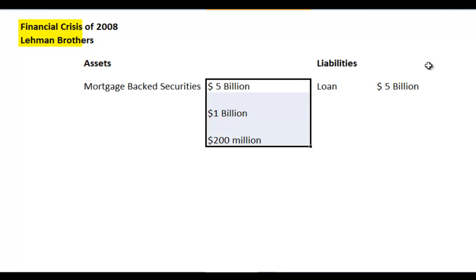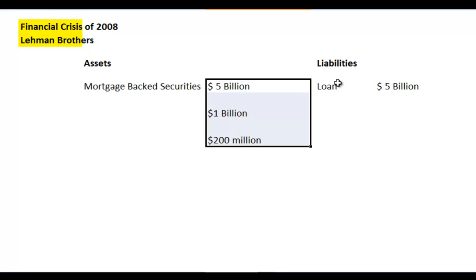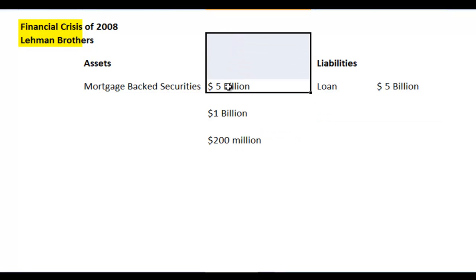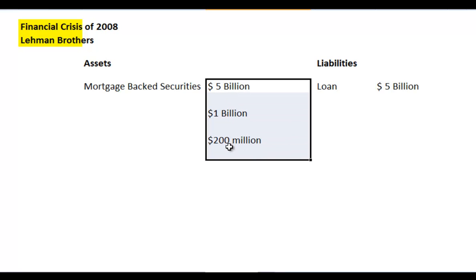Lehman Brothers had nothing to sell to pay back the lender. The lender — maybe another bank like JP Morgan or Goldman Sachs — wasn't getting their money back. That company probably owed money to another company, creating a whole vicious cycle. Companies borrowed heavily hoping assets would appreciate, but when asset values crashed to ten percent of their original worth, there was no money to pay back loans — that's essentially what led to the 2008 crisis.